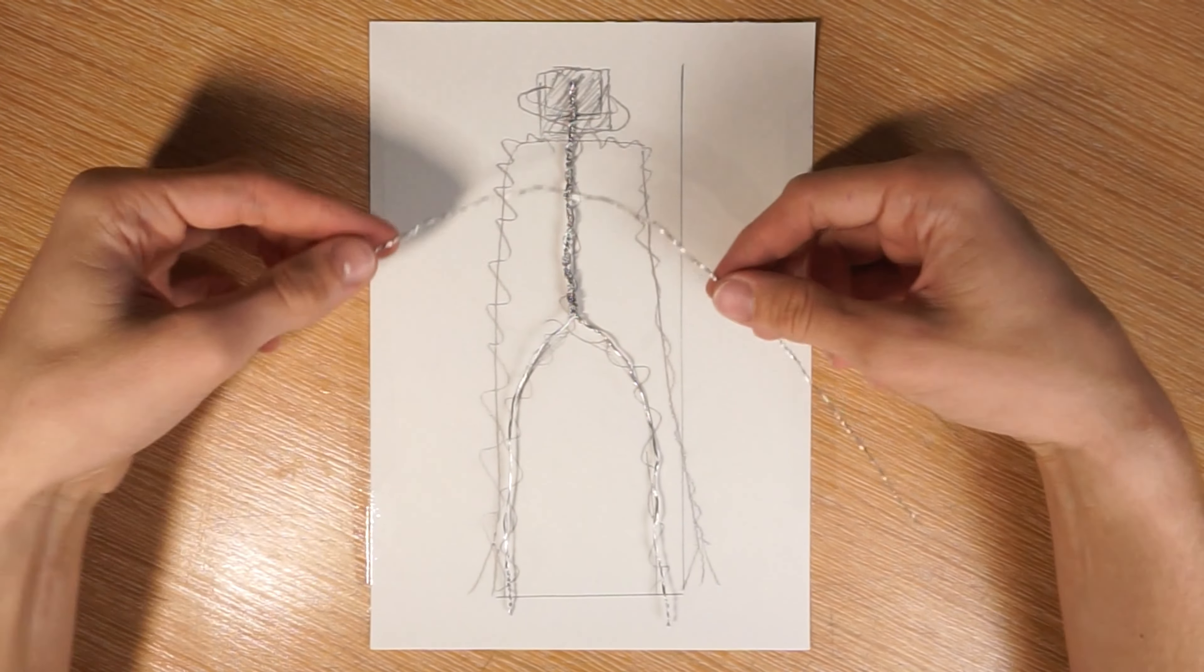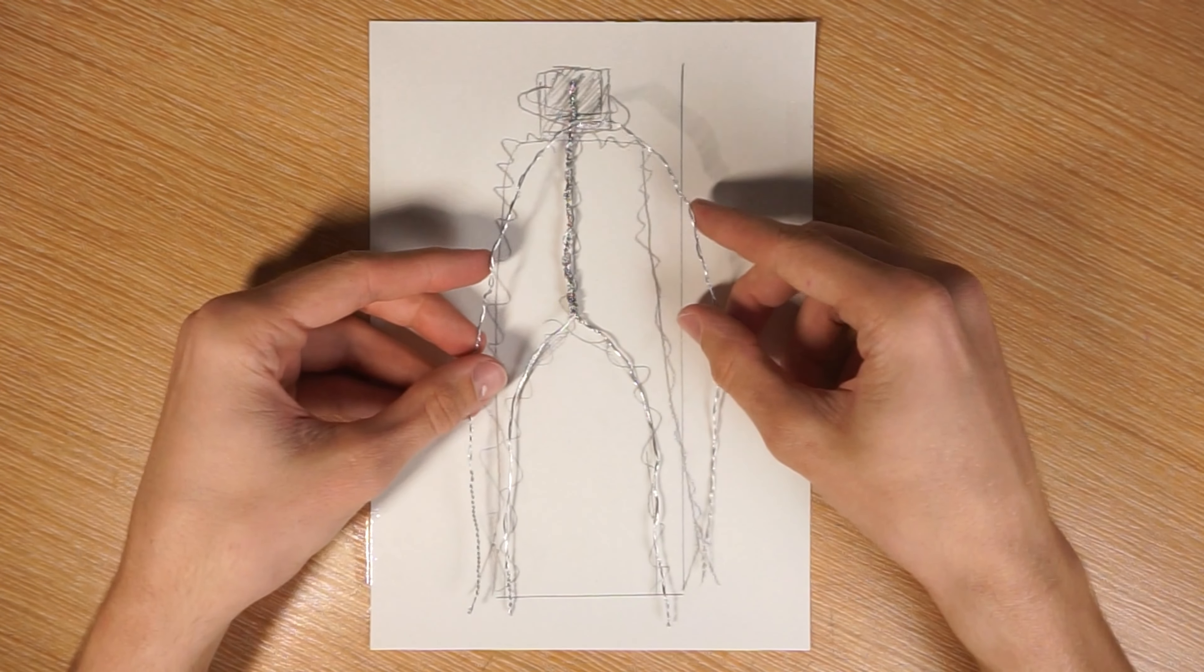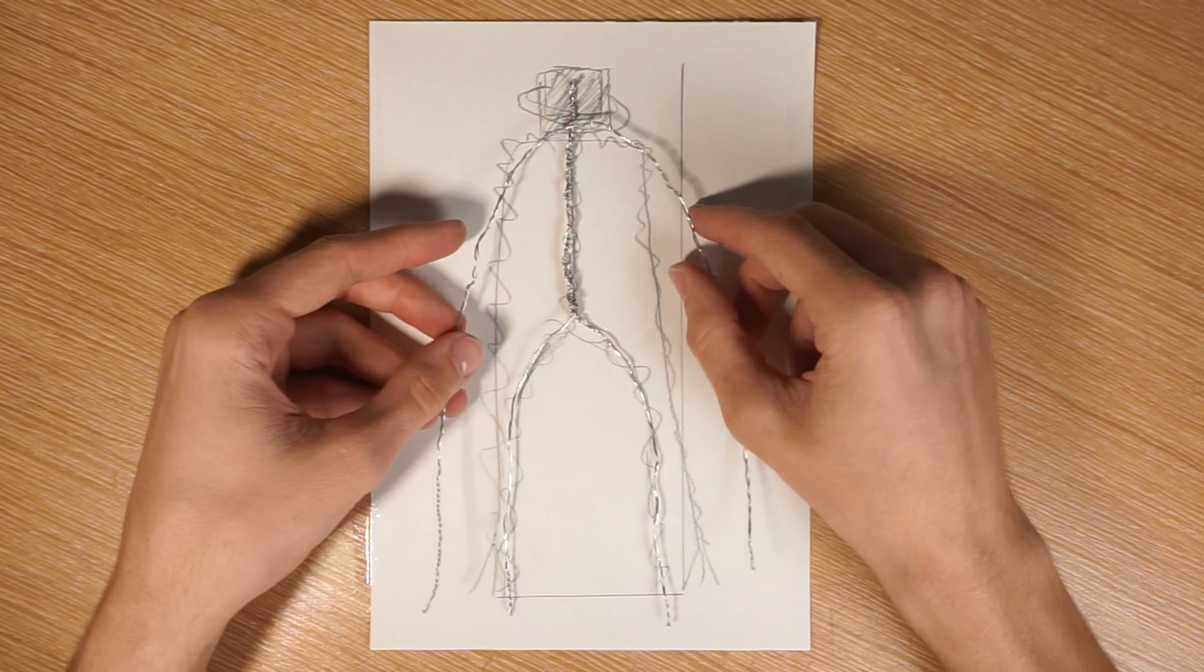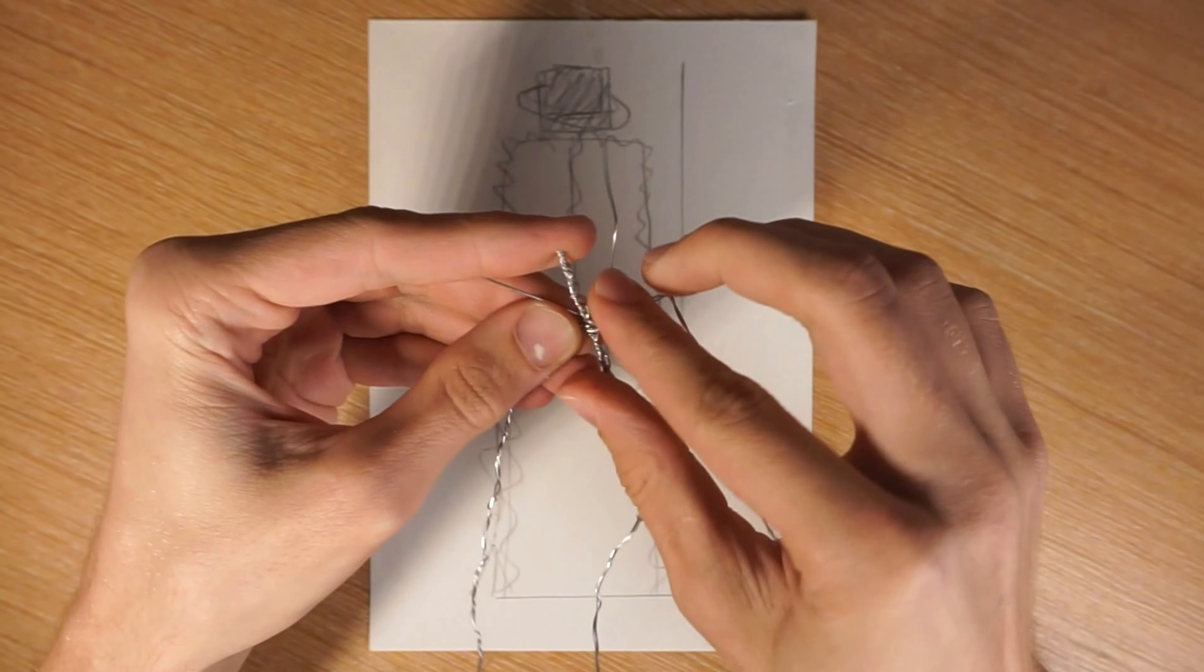I'm adding this long piece of wire as the arms. Then I'll attach the arms with a small piece of wire.